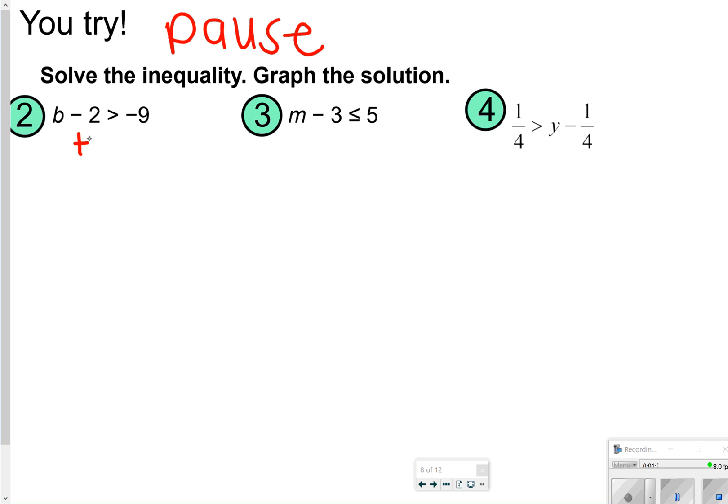So number 2, we need to add 2 to both sides to get b by itself. So we'll have b is greater than negative 7. So again, on our number line, we have negative 8, negative 7, negative 6, and greater than is an open circle pointing to the right.